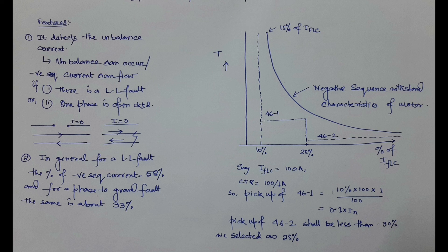The time delay setting has not been shown here because I do not have the actual motor graph — only a template for illustration. You must check how long the motor can withstand the negative sequence current and ensure the time delay is such that the relay isolates the motor before the withstand capability curve is exceeded. You can also use inverse time characteristics for coordination, but definite time is acceptable because when negative sequence current is flowing there is no point keeping the motor in circuit — it should be isolated as quickly as possible.